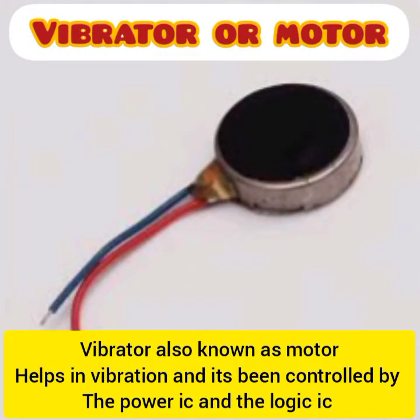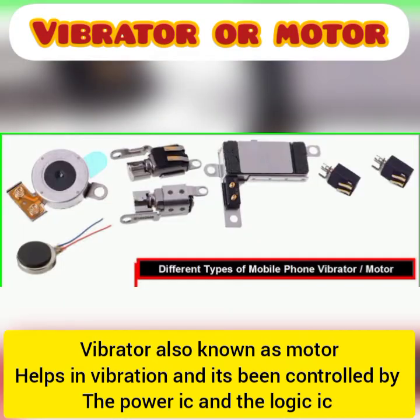The next part is the motor, that is the vibrator. All the vibration that takes place in a mobile phone is done by this device. It comes in different forms. It is controlled by the power IC and the logic IC, and it is mostly located at the lower part of the mobile phone — that is the sub-board.